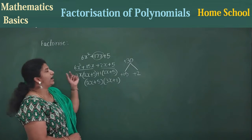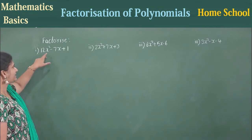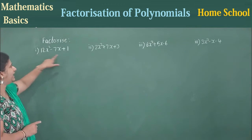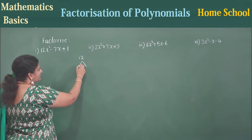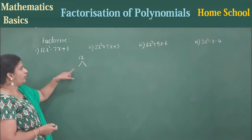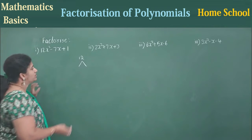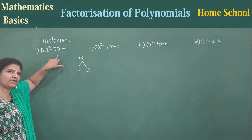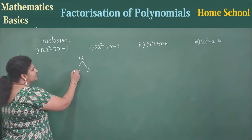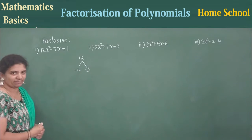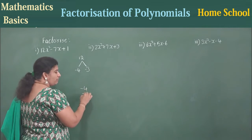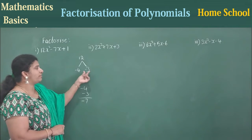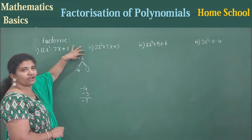Now let's start the fourth exercise. Factorize 12x² - 7x + 1. First step: multiply the numbers — 12 into 1 will be 12. Find all the factors for 12. Here 4 and 3 make 12, and 4 plus 3 gives 7. But observe: we have minus 7 here. How can you get minus 7 with 4 and 3?